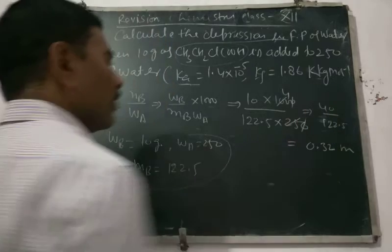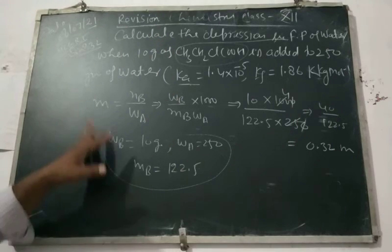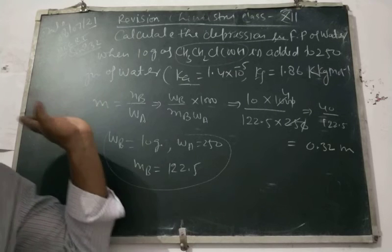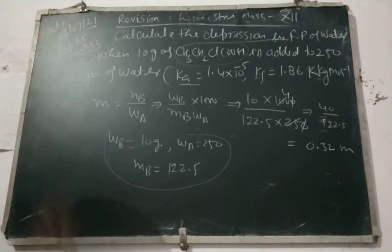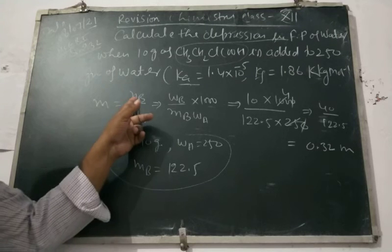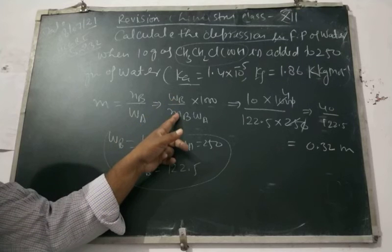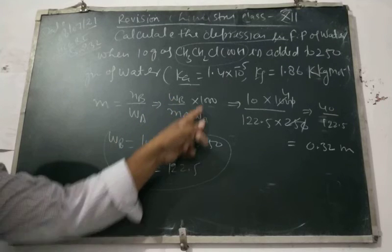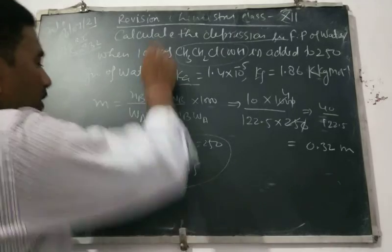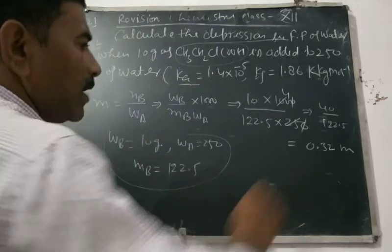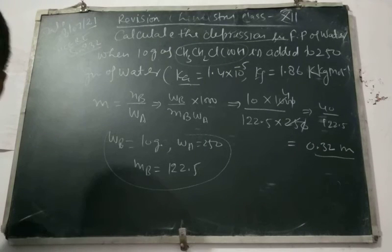Concentration या molality हम यहाँ से find कर लिया। Molality = number of moles of solute / weight of solvent in kg = nb / wa, जिसे modify किया: wb / (mb × wa) × 1000. सभी values question में दिए हुए हैं। Put करने के बाद concentration कितना आया? 0.32 आया।